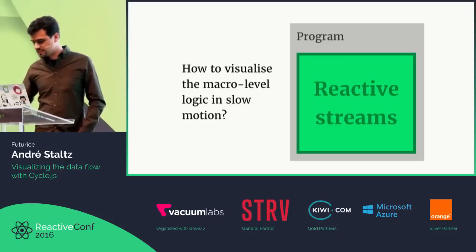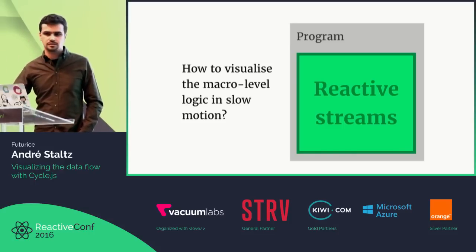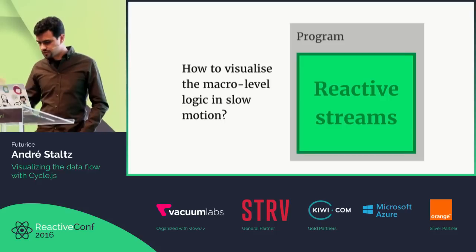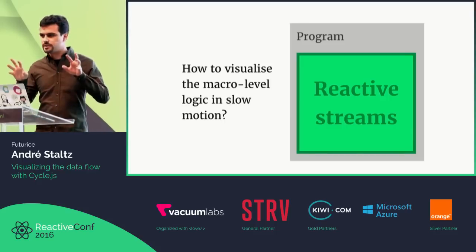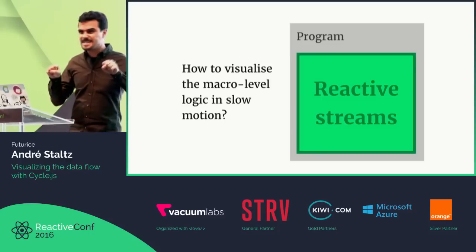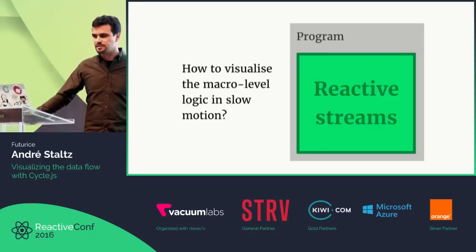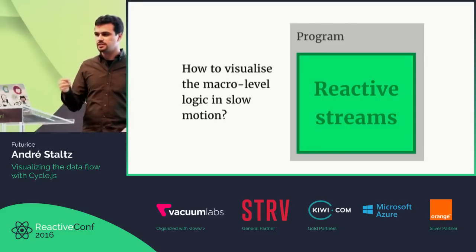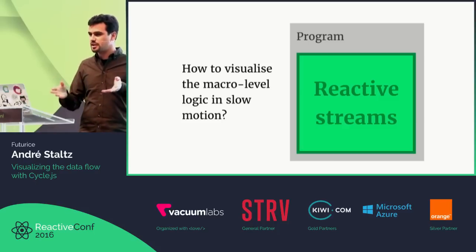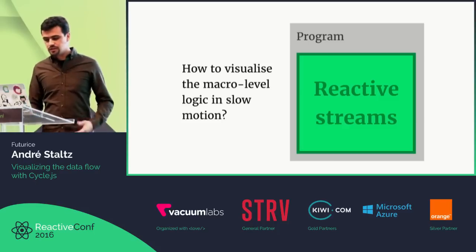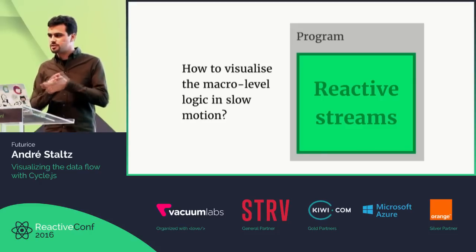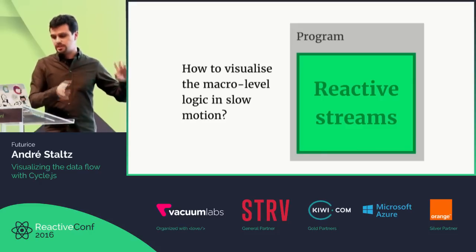We need to remove normal control flow and put something else in its place which can be visualized in a glance, and that is reactive streams — or anything that looks like data flow. This includes RxJS observables or reactive streams in general. People think streams are very scary, but I don't think it's scary — it's just different. It's pretty simple; I gave a presentation in another conference this week with 30 lines of code for a simplified RxJS.